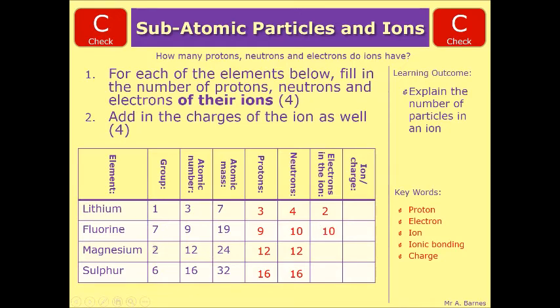Magnesium is in group 2 and has 12 electrons, so it needs to lose 2, so it becomes 10. And sulfur is in group 6. It has 16 electrons. It needs to gain 2 to get up to 8 in the outer shell. So it should be 18.